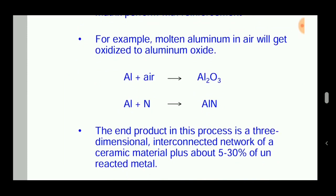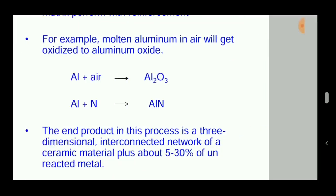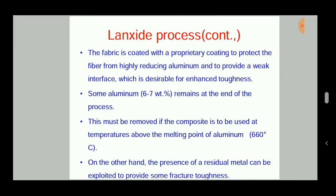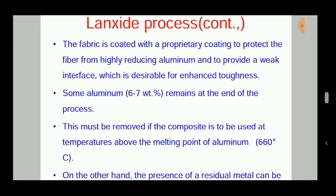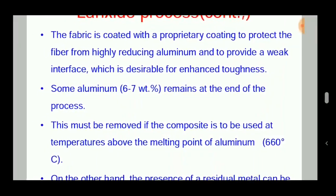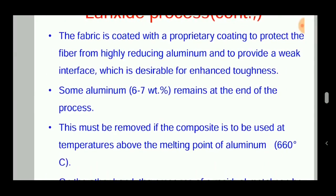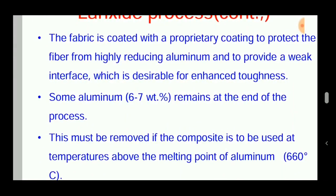The end product in this process is a three-dimensional interconnected network of a ceramic material with about five to thirty percent of unreacted metal. The fabric is coated with a proprietary coating to protect the fiber from the highly reducing aluminium and to provide a weak interface, which is desirable for enhanced toughness.